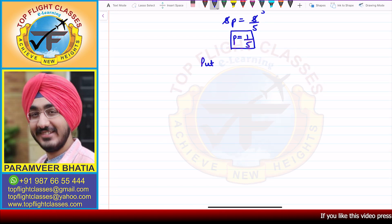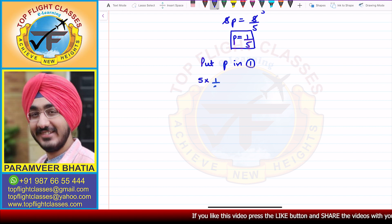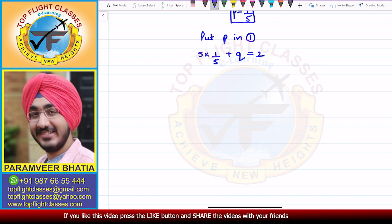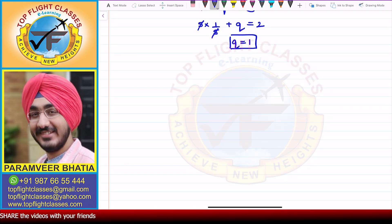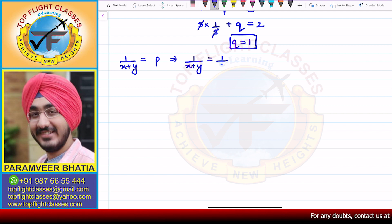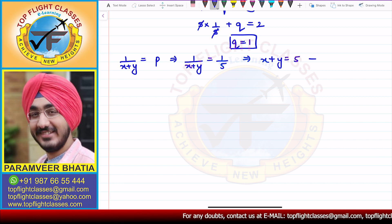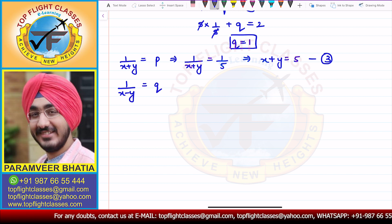Now I'll put this value in the first equation. Substituting P = 1/5: 5 × (1/5) + Q = 2, which gives 1 + Q = 2, so Q = 1. Since P = 1/(x+y) = 1/5, we get x + y = 5. This becomes the third equation.